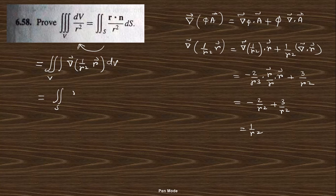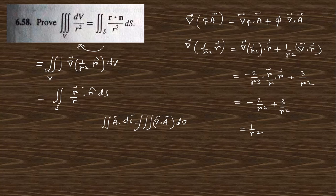So the divergence of (1/r²) r vector equals 1/r². Therefore, the volume integral of 1/r² can be written as the volume integral of divergence of (1/r²) r vector dV. Using Gauss Theorem, if we convert it to the surface integral, you need to put the vector r vector over r dot n̂ dS. Just compare with the Divergence Theorem: volume integral of divergence of A dV equals surface integral of A dot n̂ dS — hence proved.